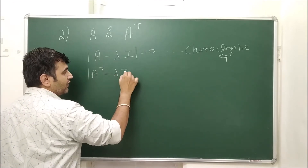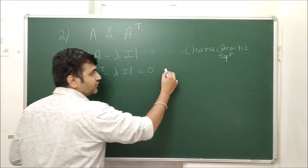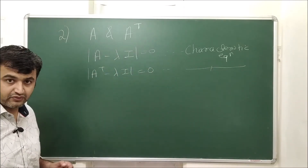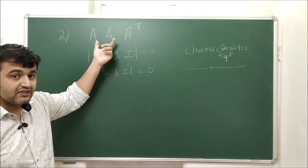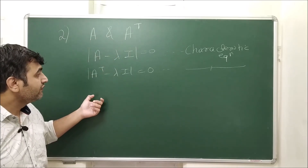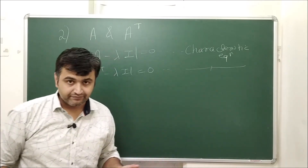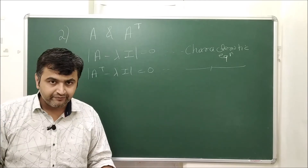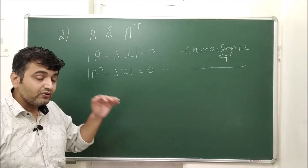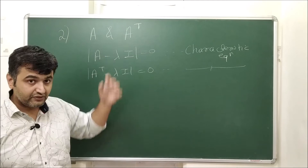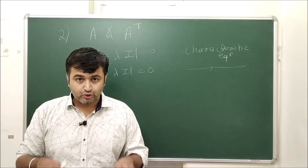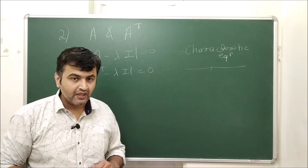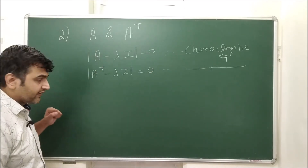For A transpose, you solve det(A transpose − λI) = 0 to get its characteristic equation. If we can show both characteristic equations are identical, then the roots — the eigenvalues — must also be the same. So it all boils down to showing that A and A transpose have the same characteristic polynomial.